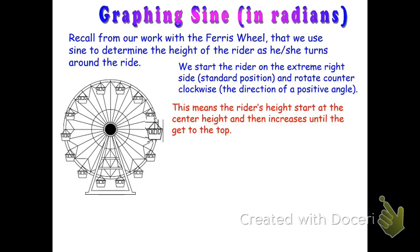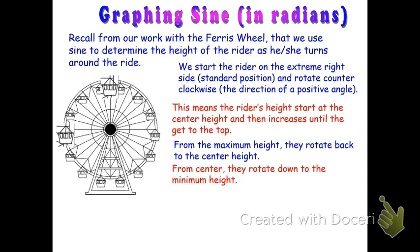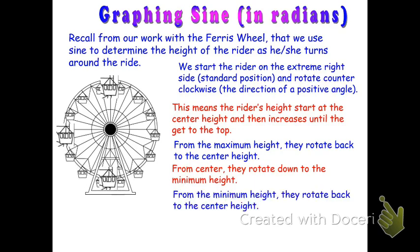From that position, they're going to rotate in a counter-clockwise direction to the top of the Ferris wheel. At the top of the Ferris wheel, they've hit their maximum height. They're going to rotate now to the extreme left-hand side, which would be the same as the center height again. From that position, they'll rotate to the bottom, which would be their minimum height. And from there, they'll rotate back to where they started, which is back to the right-hand side, or their center height.